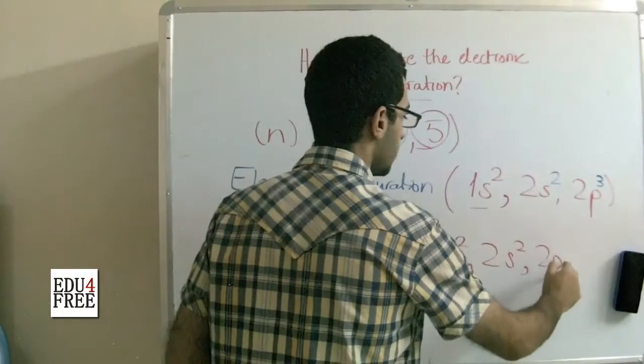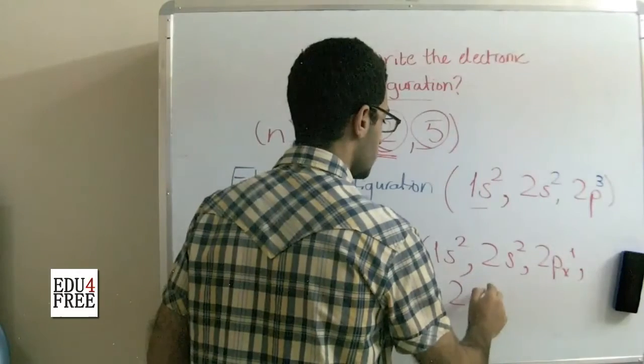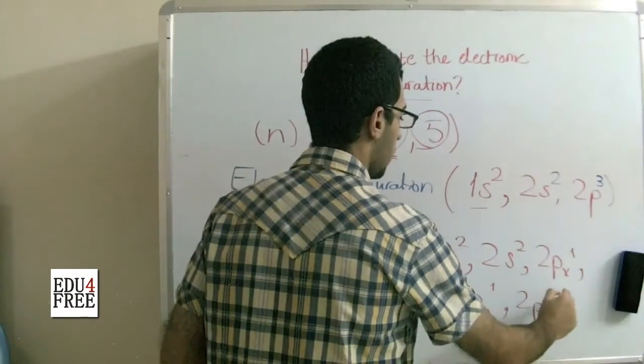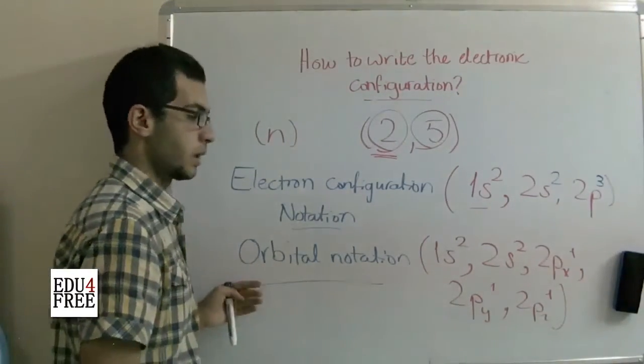We write that the 2px contains 1 electron, the 2py contains 1 electron, and the 2pz contains 1 electron. This is the orbital notation.